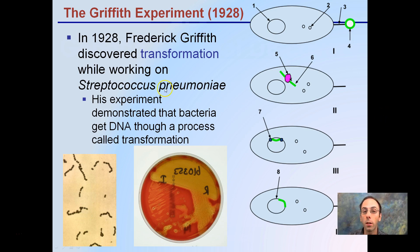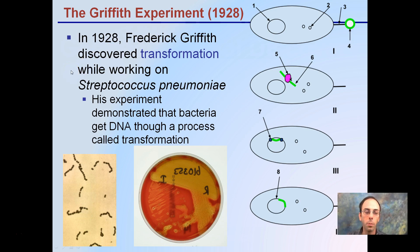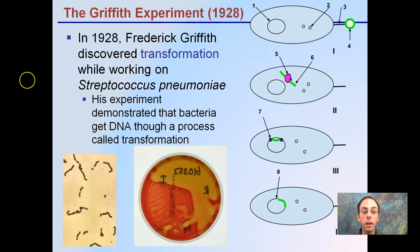Starting with the Griffith experiment, which occurred around 1928, he discovered the concept of transformation — an important concept not only for this lecture series but also when we get to biotechnology. His experiment demonstrated that bacteria acquire DNA through a process called transformation.